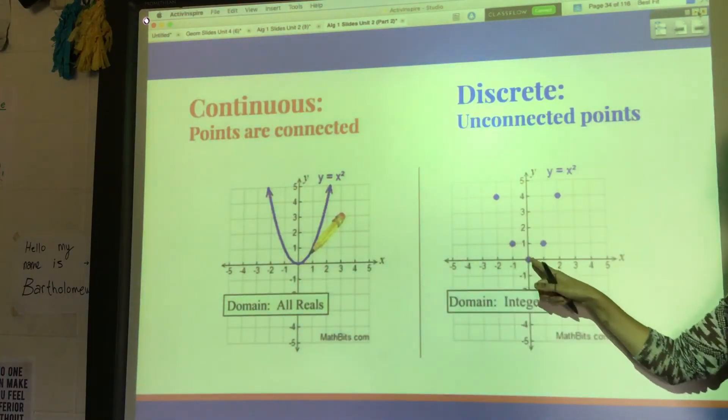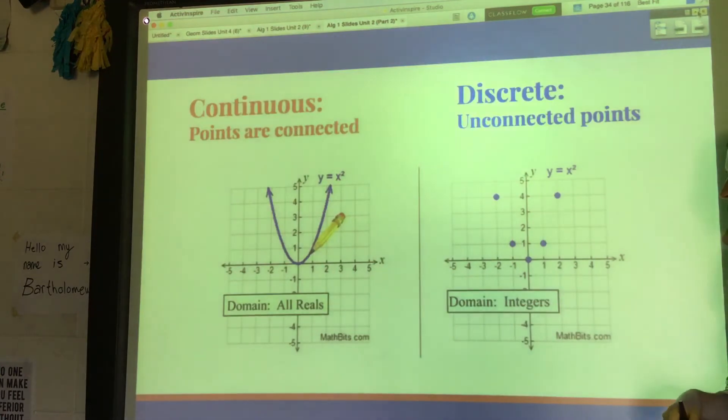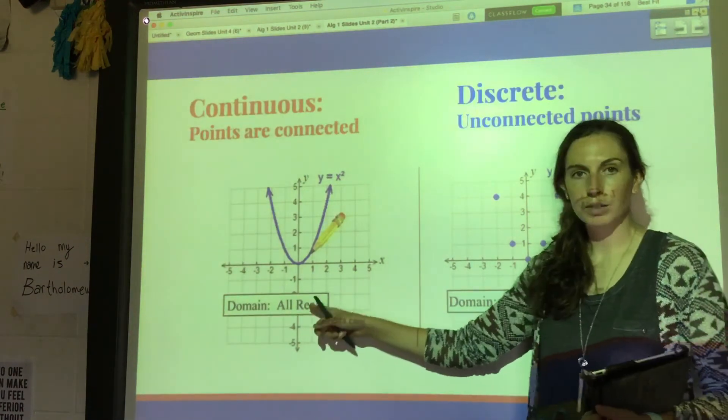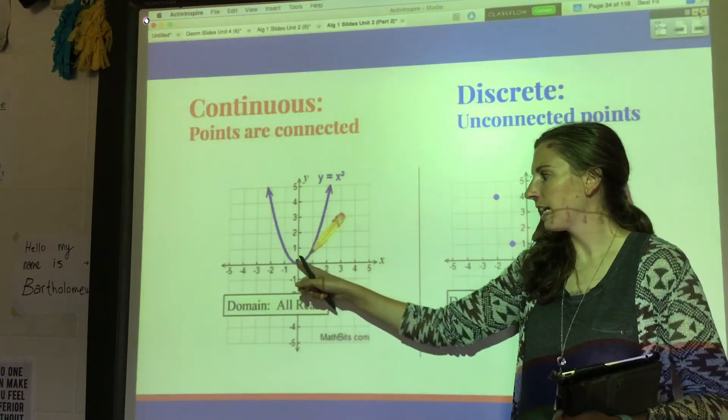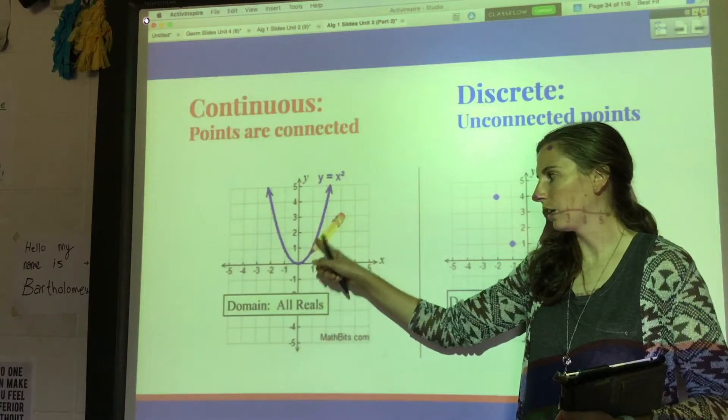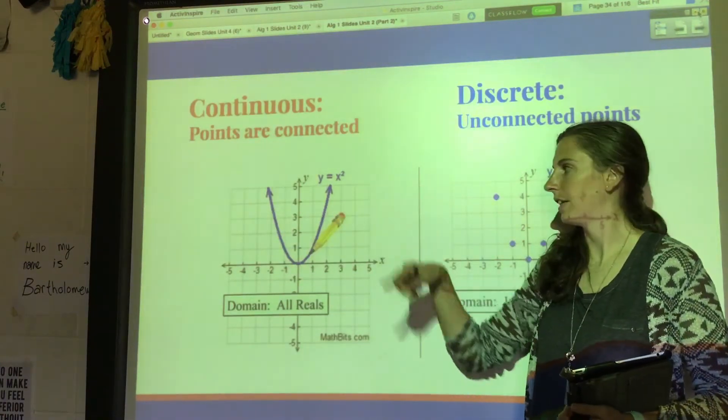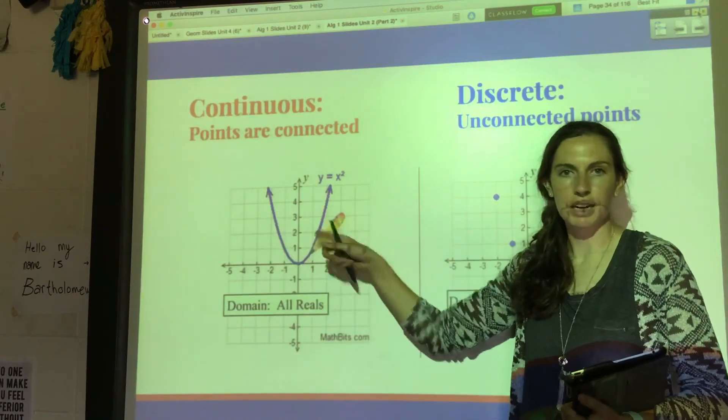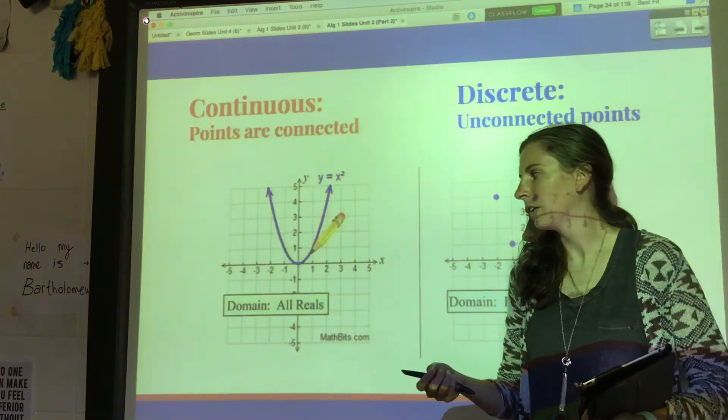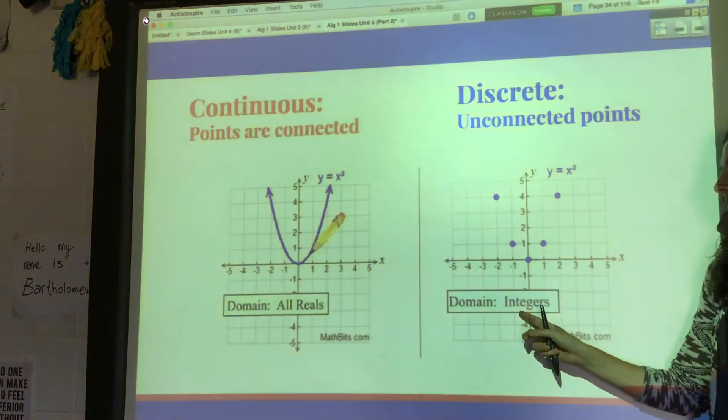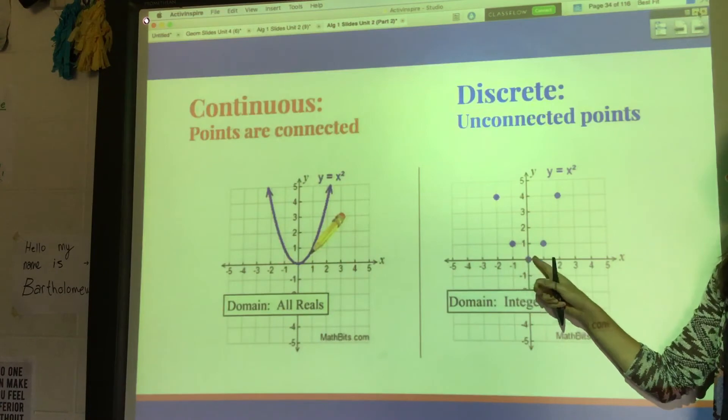Like this is kind of like the same function, but instead of all the points in between, it's just like whole numbers, except it does go negative. So for this one we could say the domain is all real numbers because it hits every single x-value to negative infinity and to positive infinity. It's literally every number is in the domain here.